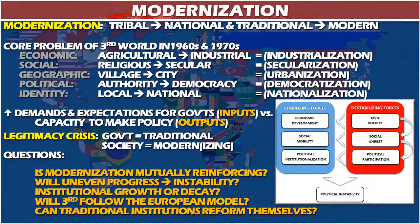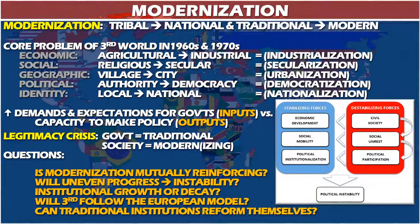There's also a political shift: from most governments being authoritarian or autocracies — monarchies, military governments, or empires — to adopting a democratic mode, whether substantively or just on the surface. More countries become democratized during this period, though what democracy means varies from place to place. And finally, there's a shift from a local, tribal, village, or peasant identity to a national identity.